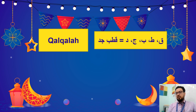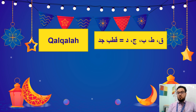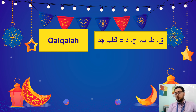Qalqalah has only five letters which are Qaf, Ta, Ba, Jim and Dal — remembered by the mnemonic 'Qutab Jadd.' The first rule is to have one of these letters, and the second rule is that the letter must have sukun (be consonant).